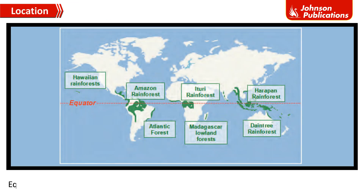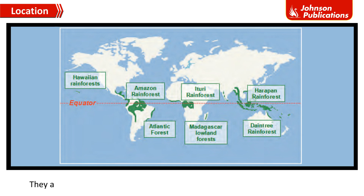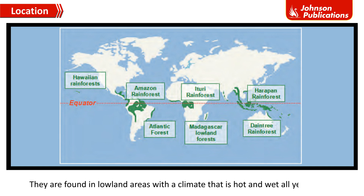Equatorial forests are located around the equator and cover about 6% of the Earth's surface. They are found in lowland areas with a climate that is hot and wet all year round.